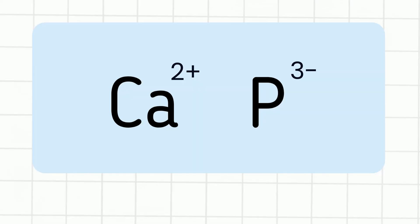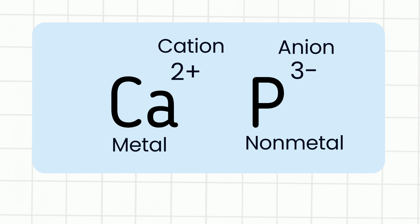Okay, up first we have a calcium ion with a positive 2 charge and a phosphorus ion with a negative 3 charge. Remember with an ionic compound you have a metal and a nonmetal combined. Calcium is a metal and phosphorus is a nonmetal. So we're going to write it. Remember the cation, the positive ion, always goes first and the anion goes second.